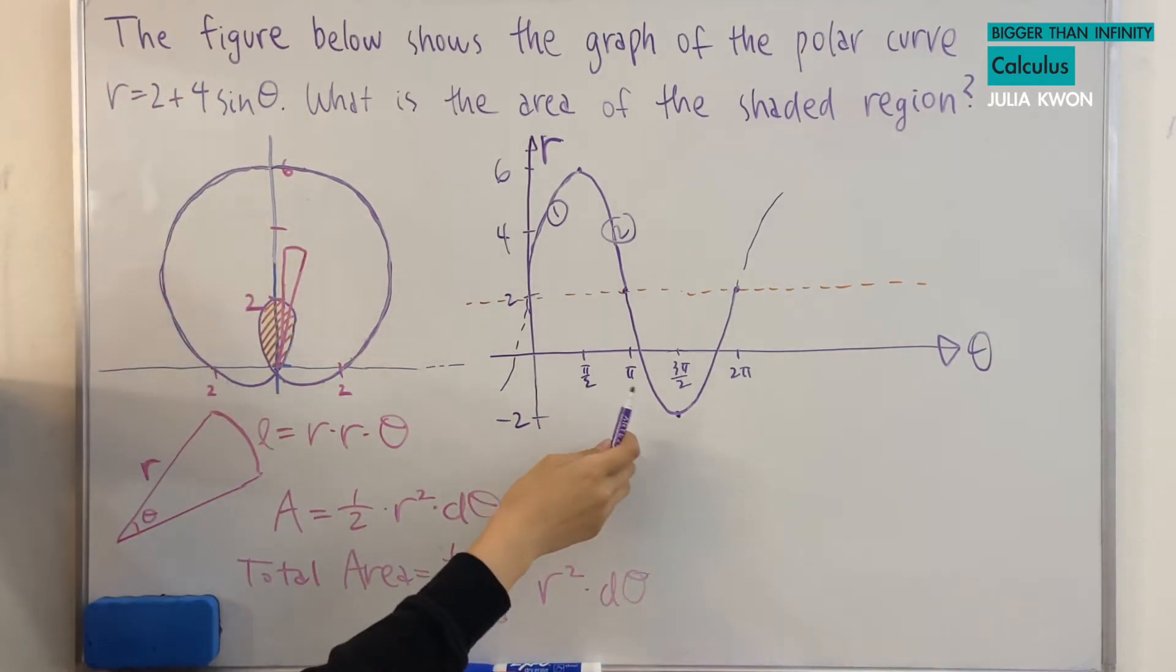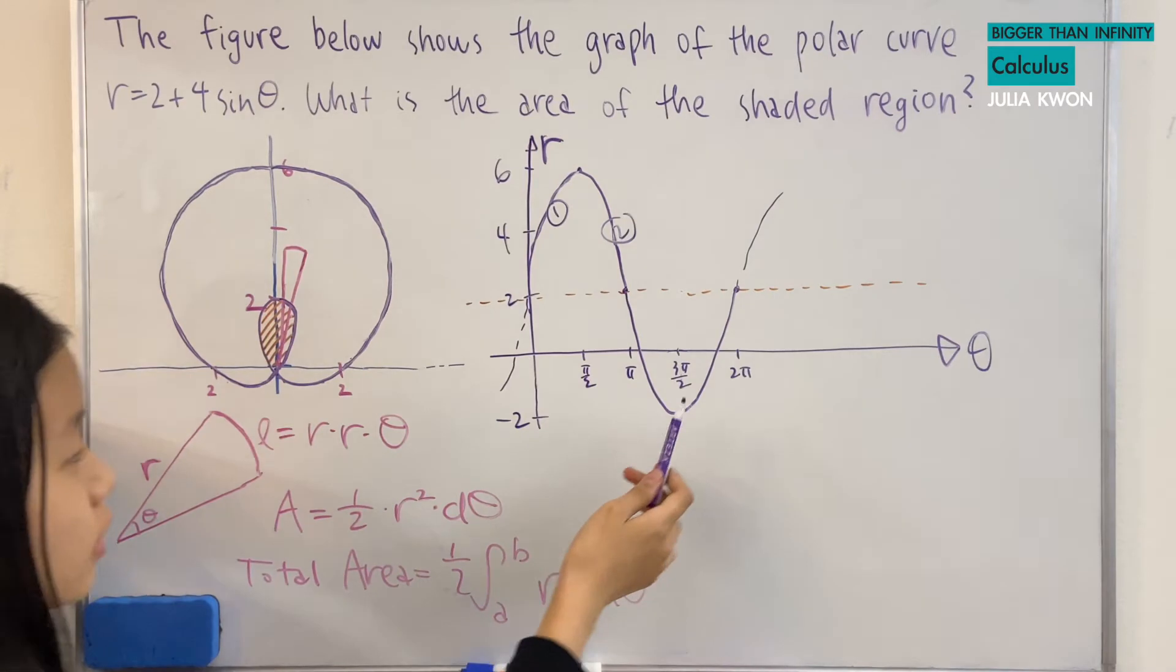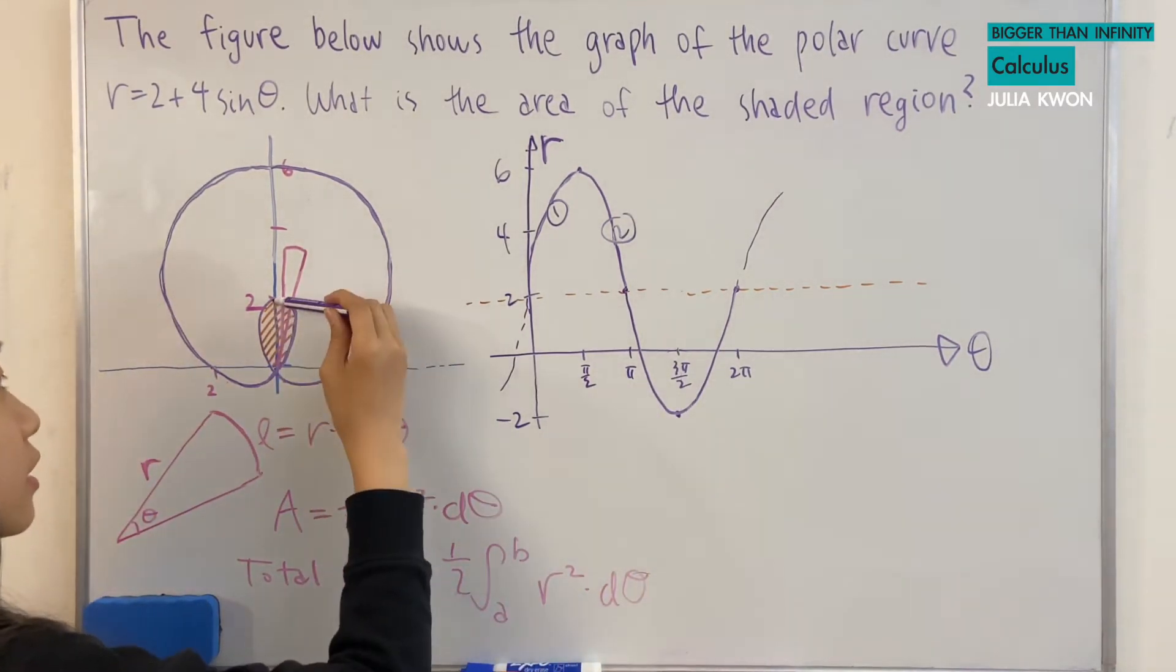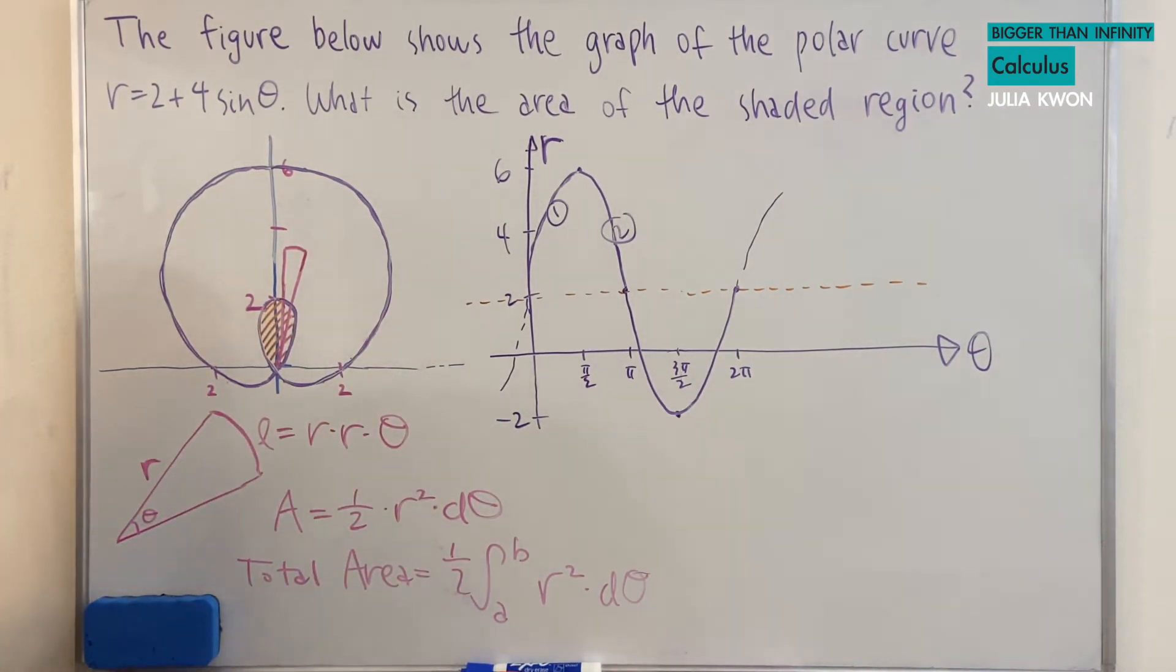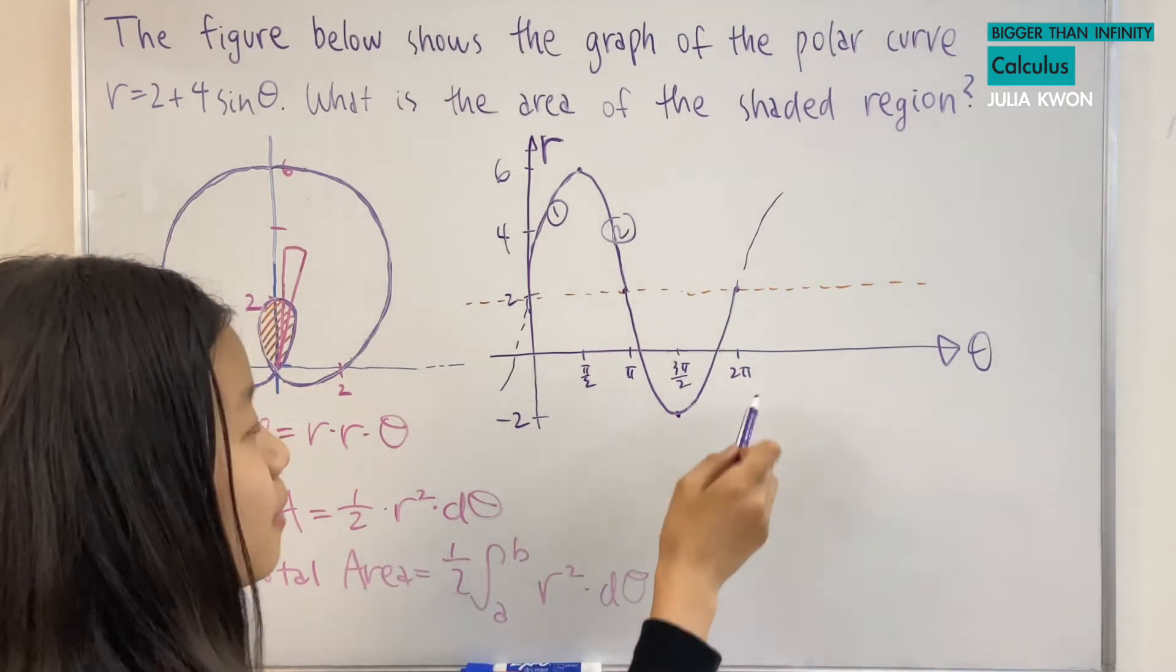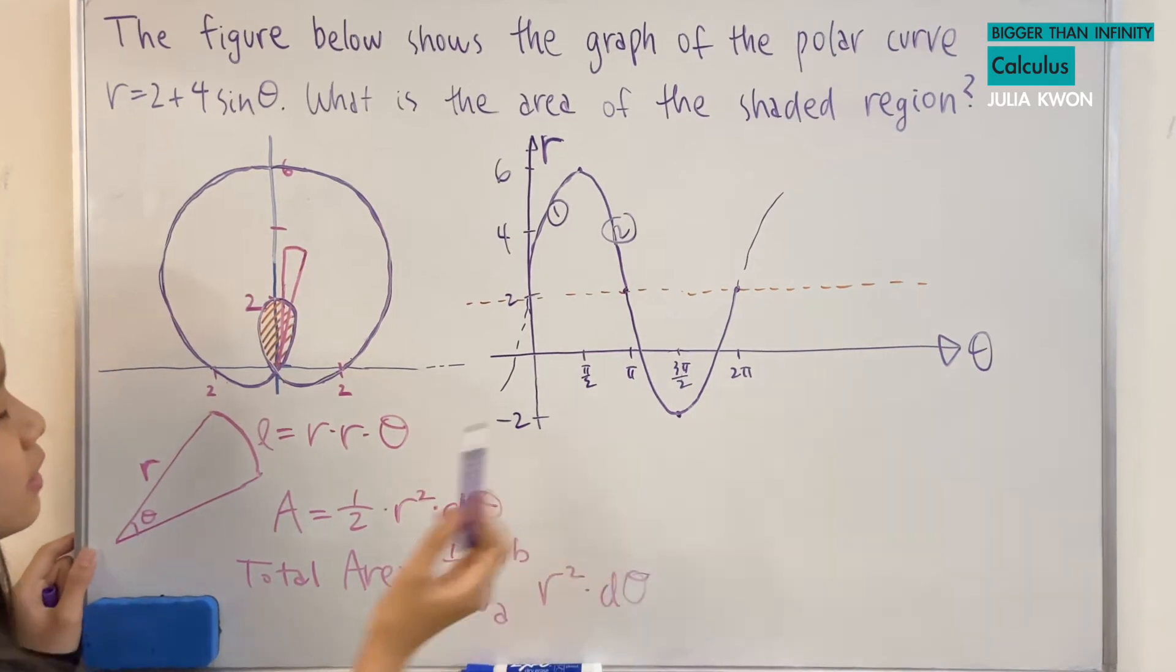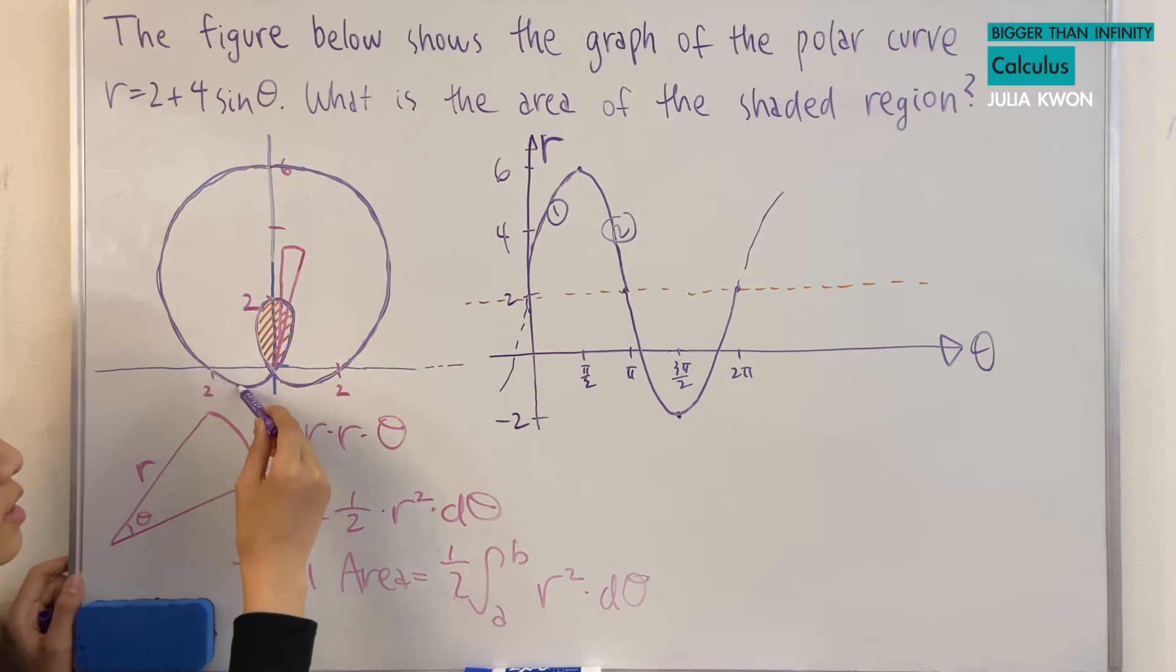And then for pi to 3 pi over 2, that would be this length. And then from 3 pi over 2 to 2 pi, that would be from here to right here. And so many of you guys might think that our new interval would be from pi to 2 pi, which is not true.